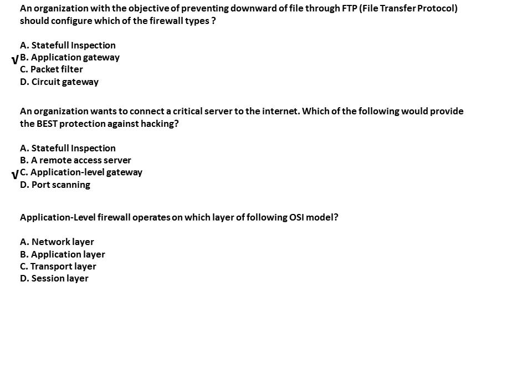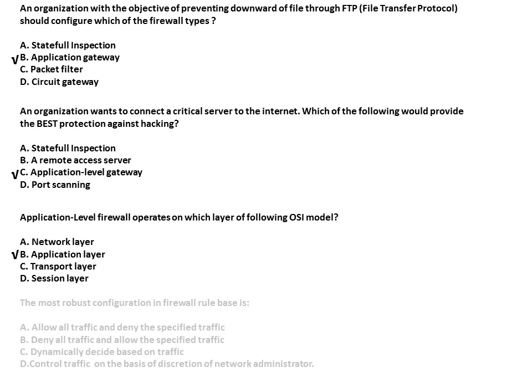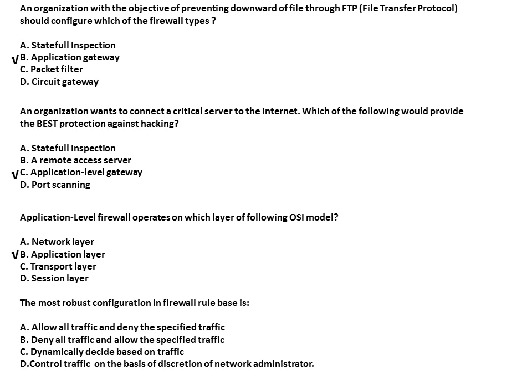Application level firewall operates on which layer of the OSI model? The answer is the 7th layer, that is the application layer. The most robust configuration in a firewall rule base is to deny all traffic and allow only specific traffic.